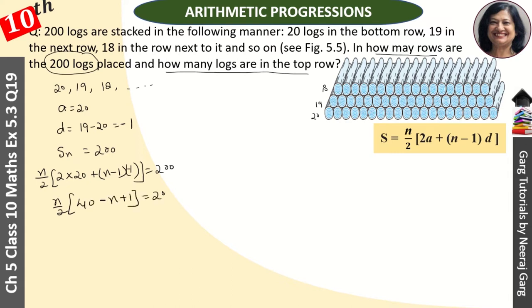That equals 200. Multiplying, we get N times 41 minus N equals 2 times 200. So 41N minus N square equals 400. And 0 equals N square minus 41N plus 400.